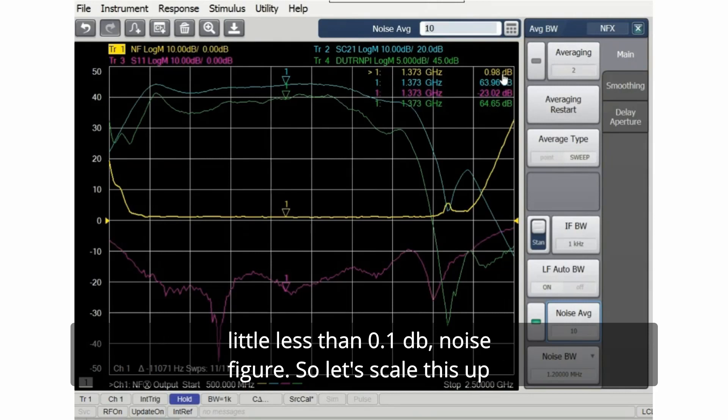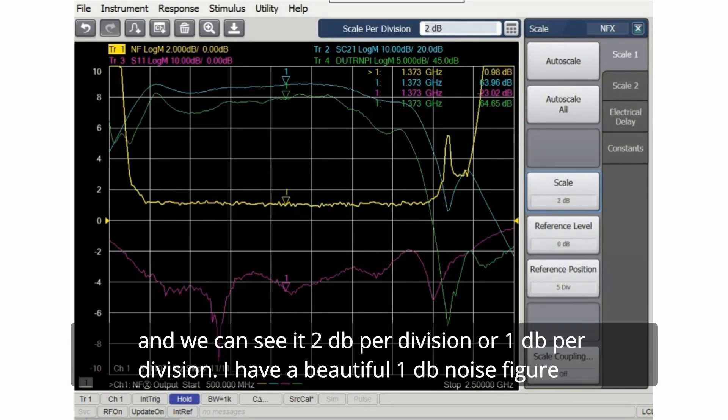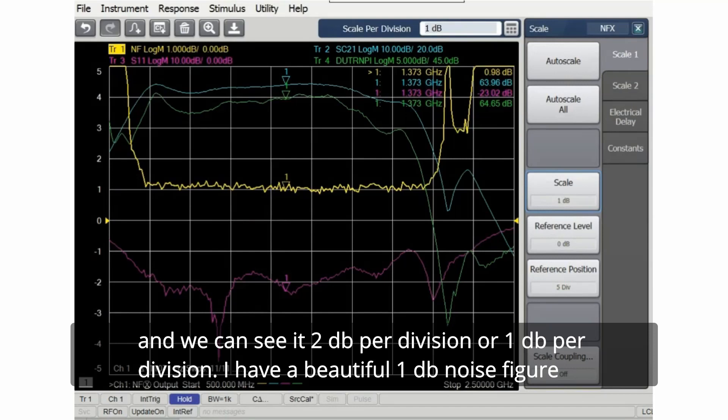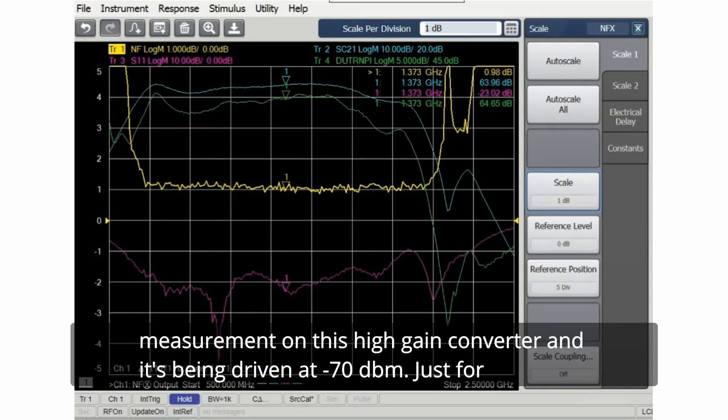My noise figure is nice and beautiful, little less than 0.1 dB noise figure. So let's scale this up and we can see at 2 dB per division or 1 dB per division, have a beautiful 1 dB noise figure measurement on this high gain converter and it's being driven at minus 70 dBm.